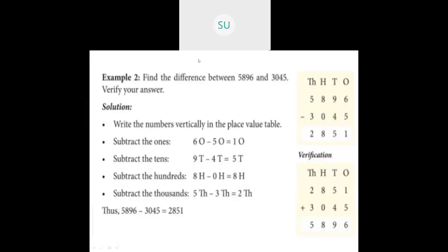Now another example: find the difference between 5896 and 3045 and verify the answer. Write the larger number 5896 vertically: 6 in the ones place, 9 in the tens place, 8 in the hundreds place, and 5 in the thousands place. Then the smaller number 3045: 5 in ones, 4 in tens, 0 in hundreds, and 3 in thousands.